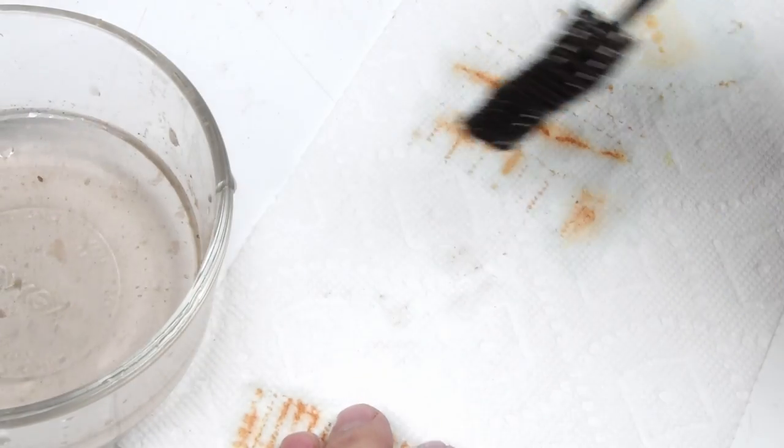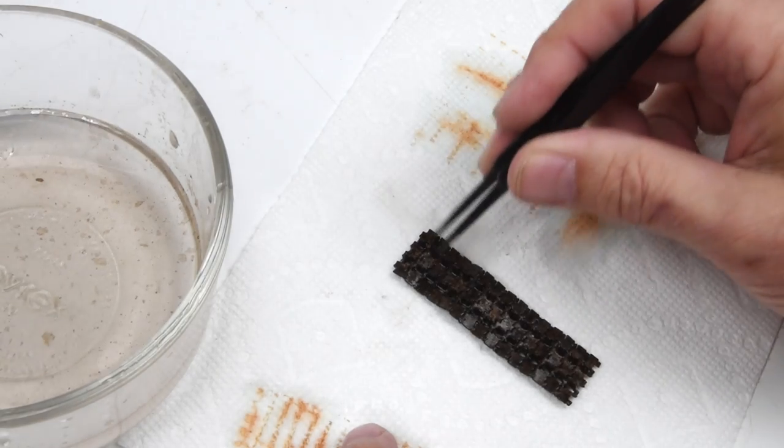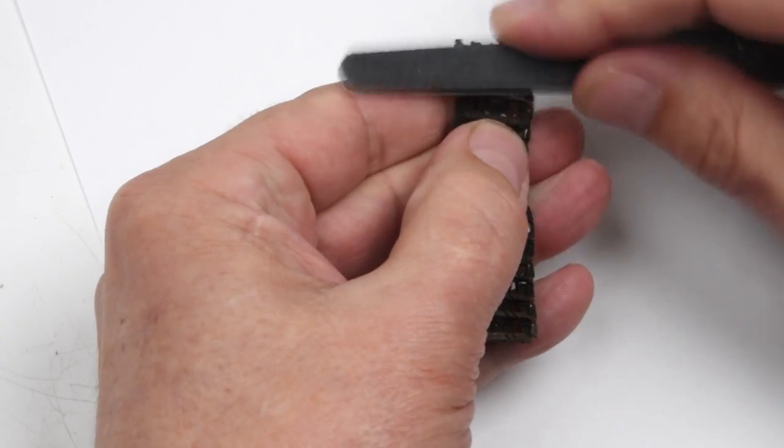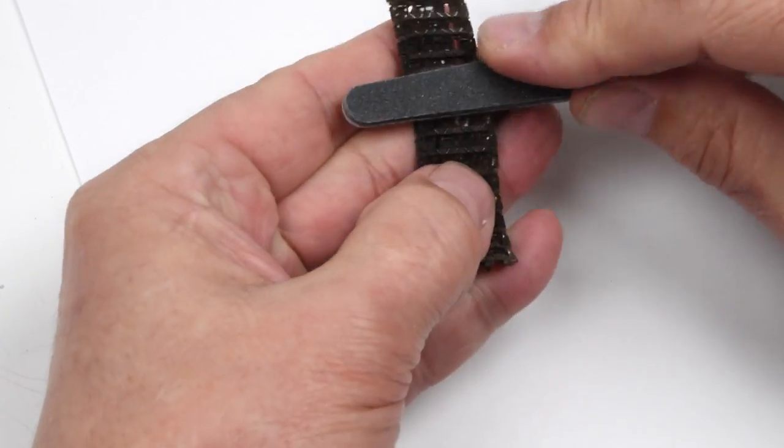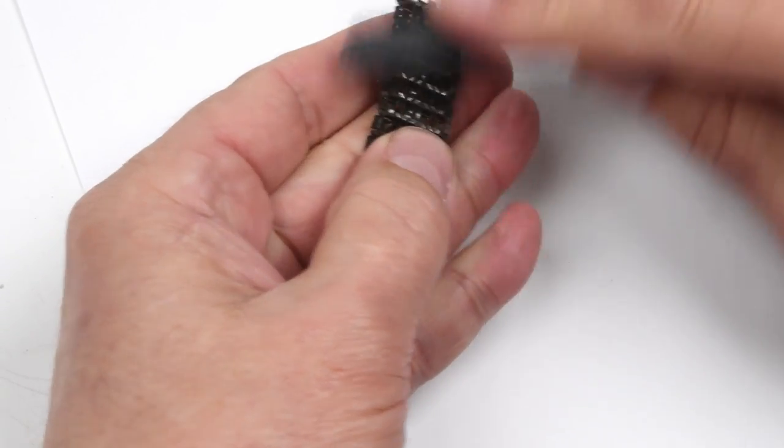At this point, the track could be used on our models. However, there's a few touches we can add here. Perhaps, for instance, we'd like to show a little bit of motion. To do that, we just polish up some of the high points on the exterior of the track where it may come into contact with the ground and the friction has polished off those high areas.